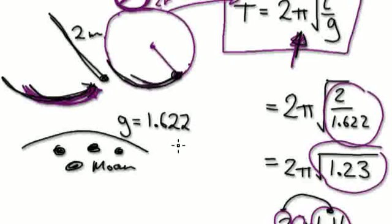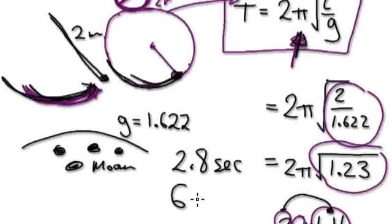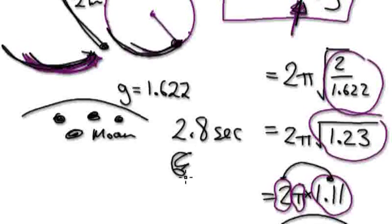In the previous video, we worked it out. If you did this on Earth, it would be 2.8 seconds, something like that. On the moon, it would take longer. It would take 7 seconds. It would take 7 seconds on the moon.